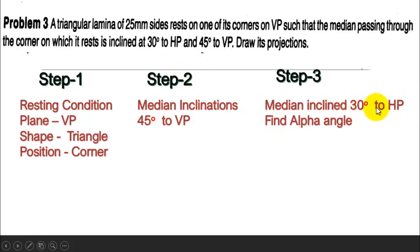When the median is inclined in the third step, we need to find alpha angle because it is resting on VP.